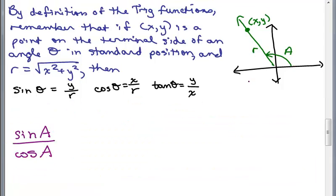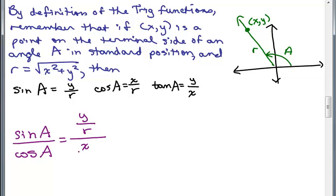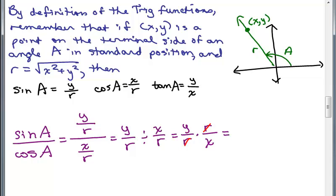Starting off with these definitions again, what would sine of A over cosine of A equal? We can replace sine of A with y over r, and cosine with x over r. So this means y over r divided by x over r, which is y over r times r over x. We can cancel those out so the answer is y over x. But y over x is the same thing as tangent of A. So our next identity is: tangent of A equals sine of A over cosine of A.